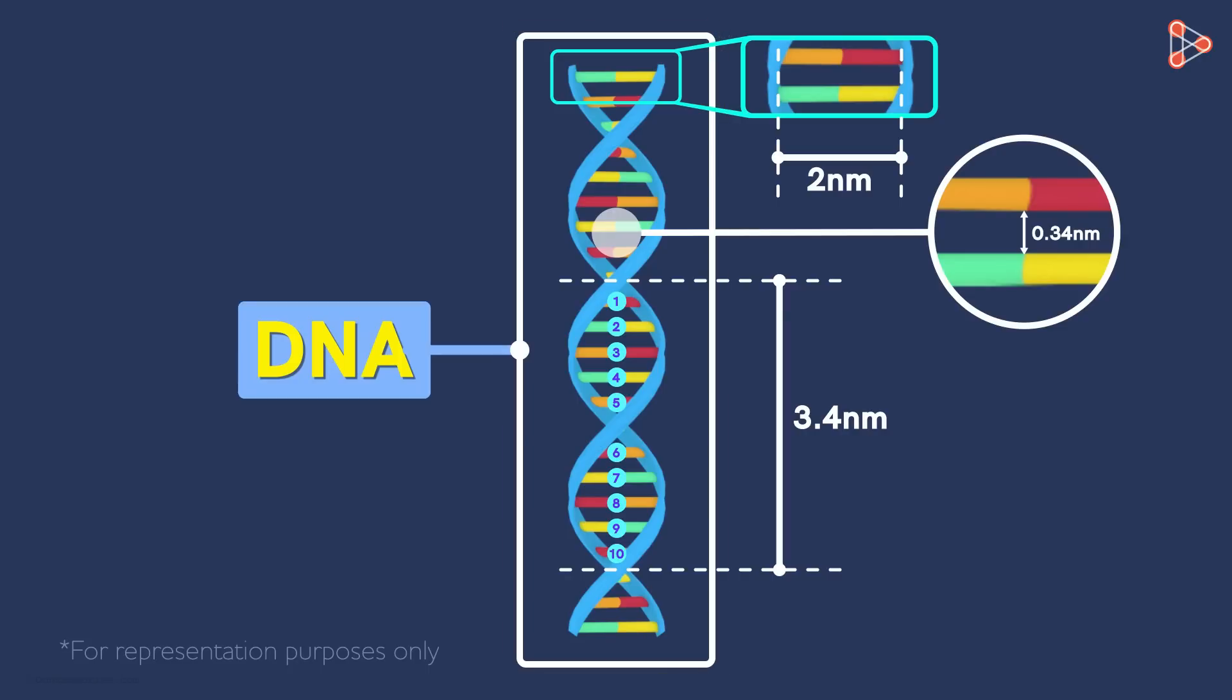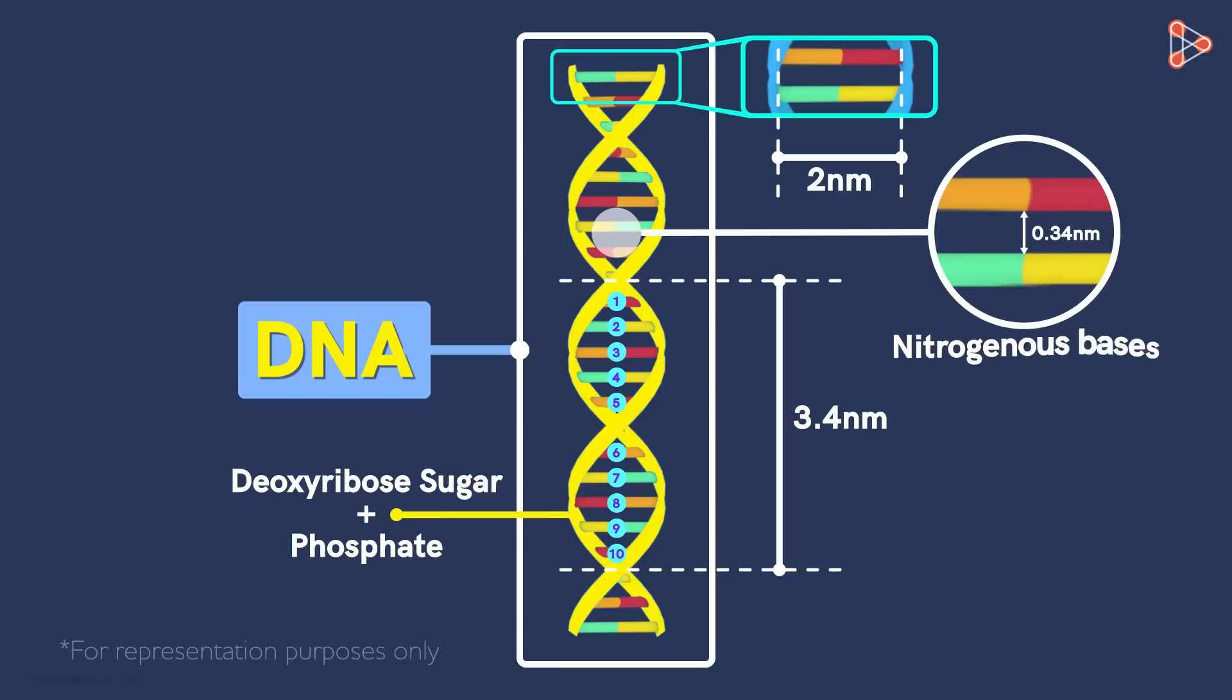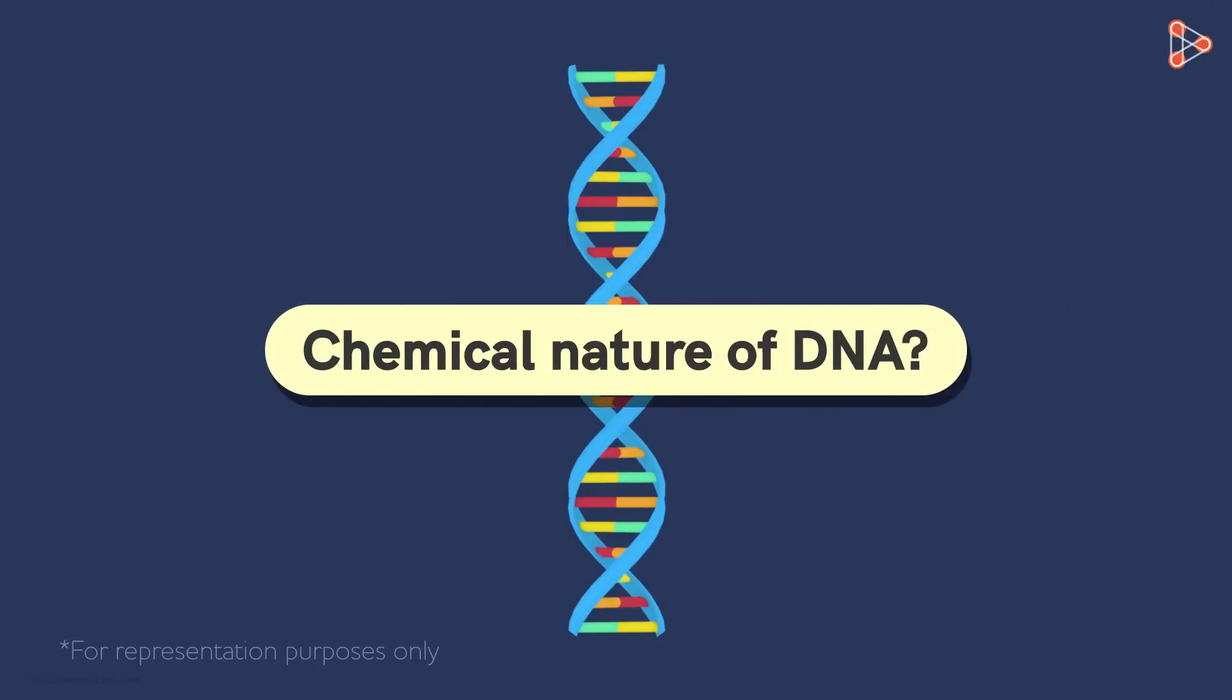So in this double helix, this portion is the backbone which is made up of the Deoxyribose molecules and the phosphate groups. Whereas, this portion that forms the core is made up of the Nitrogenous bases. Now can you guess the chemical nature of DNA?